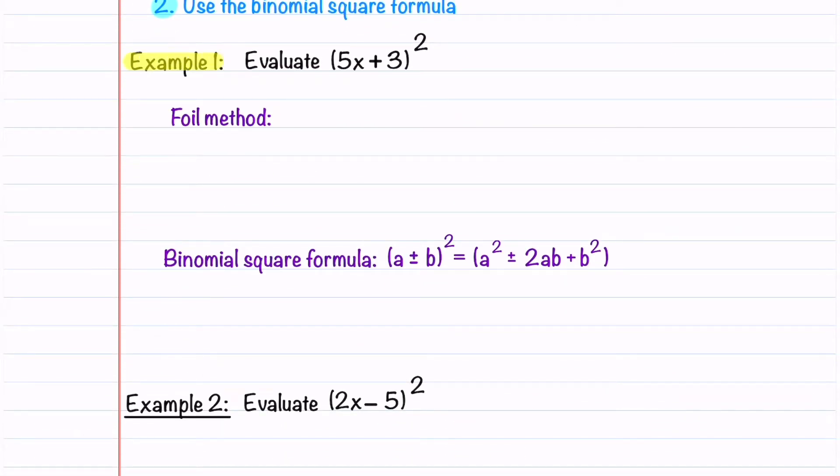In our first example, we're going to square the binomial using the FOIL method and using the binomial square formula so you can see why the binomial square formula works. Let's do the FOIL method first. We have (5x + 3)² which is equal to (5x + 3)(5x + 3).